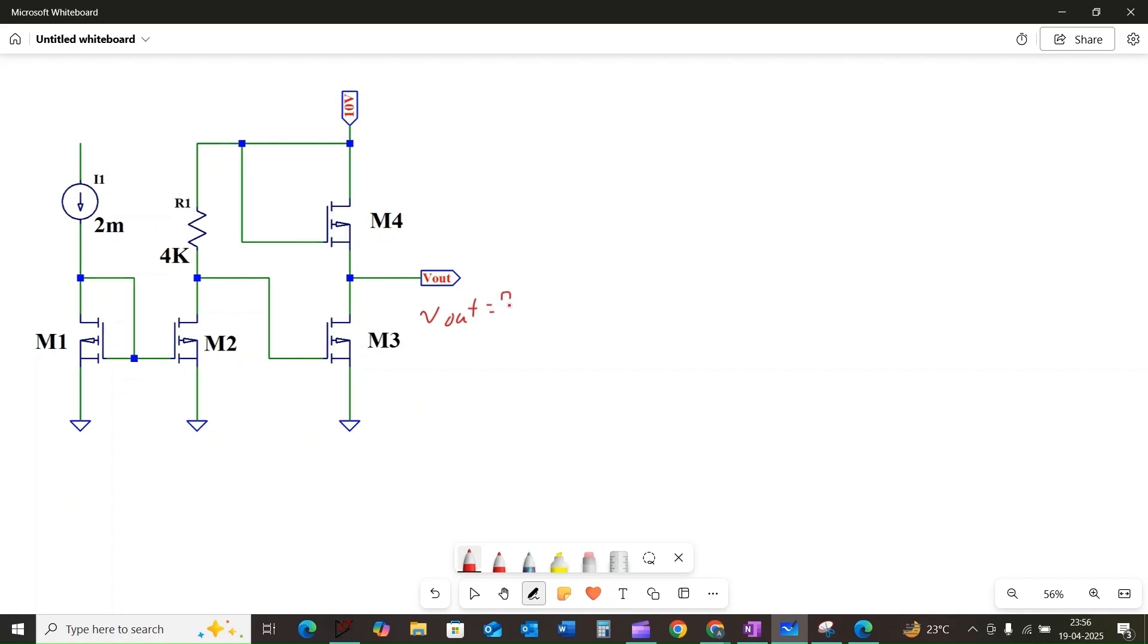We need to find the voltage across the output. We have four MOSFETs: M1, M2, M3, and M4. They are identical MOSFETs and all are operating in saturation region. Let us break it down step by step to find out the output voltage.